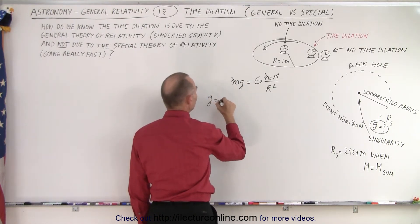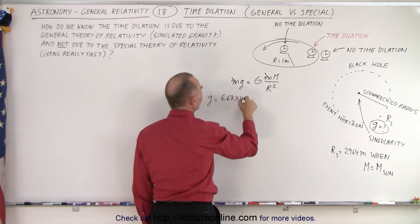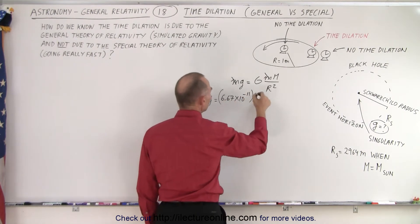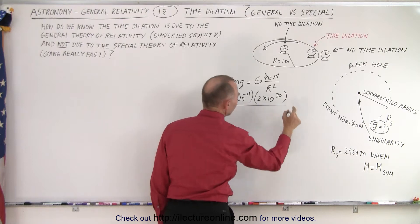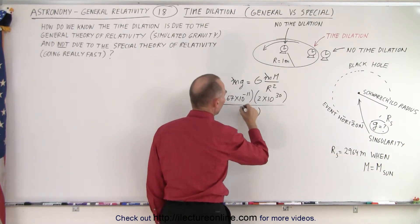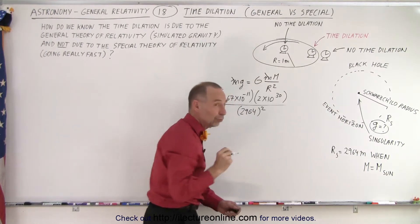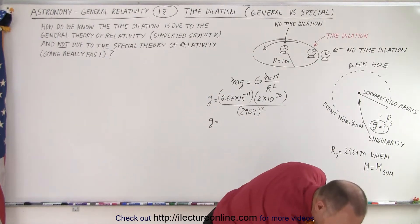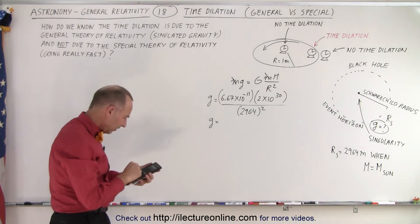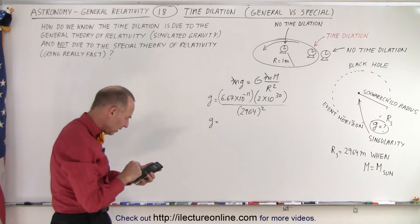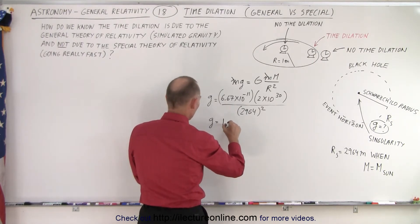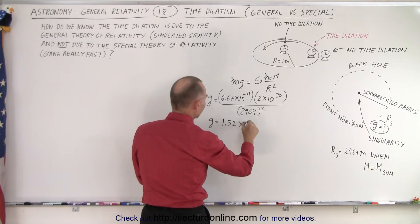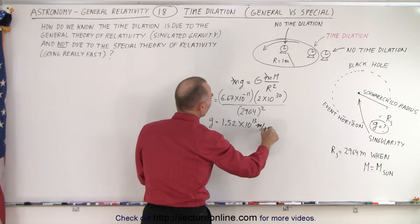Plugging in the numbers: G is 6.67×10⁻¹¹, the mass of the Sun is 2×10³⁰ kg, and the radius is 2,964 meters squared. That gives us g = 6.67×10⁻¹¹ × 2×10³⁰ ÷ (2,964)² = 1.52×10¹³ meters per second squared. This is the acceleration due to gravity at the event horizon of such a black hole.